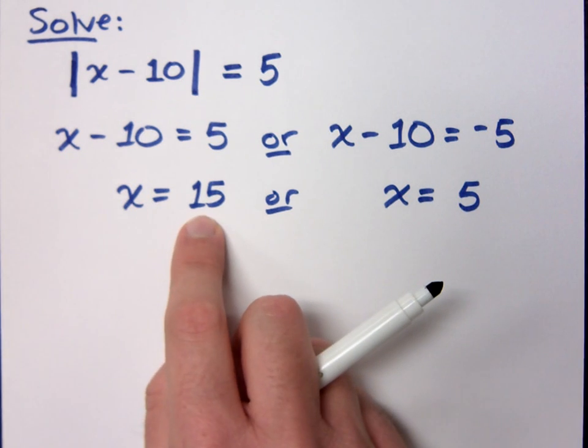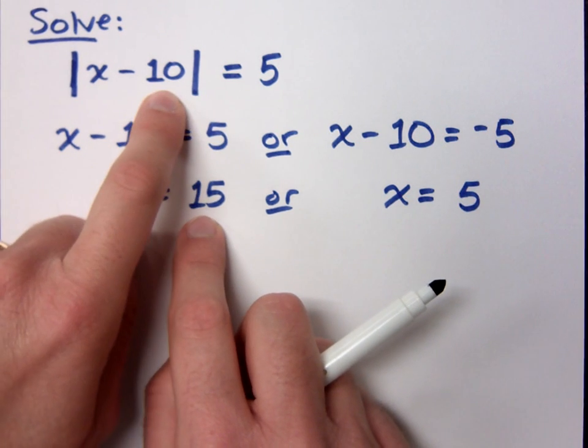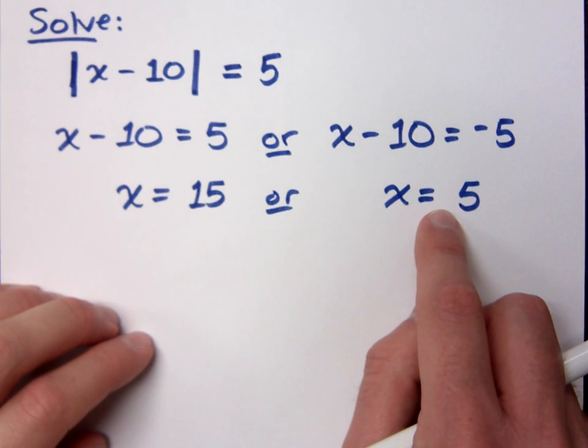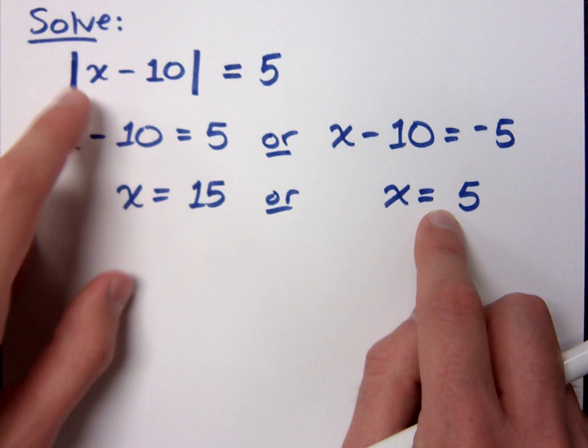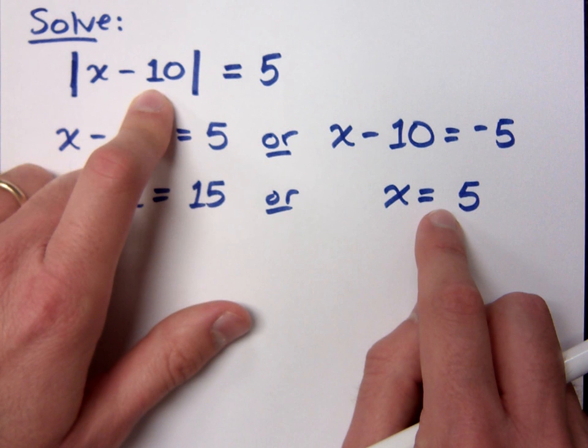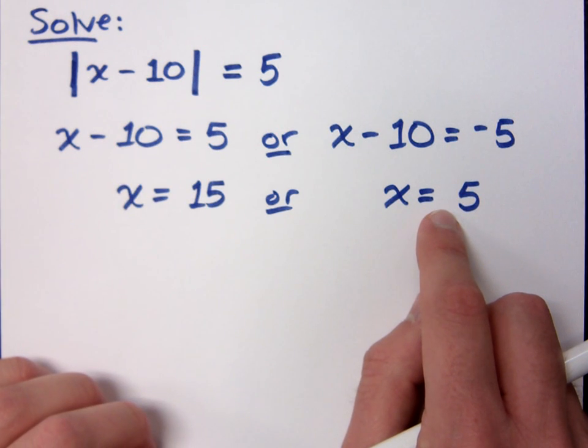If I plug in 15, just check this to make sure. What's 15 minus 10? And the absolute value of 5 is 5. That's cool. Here, X is 5. Plug in 5, 5 minus 10 is negative 5. Do you all agree?